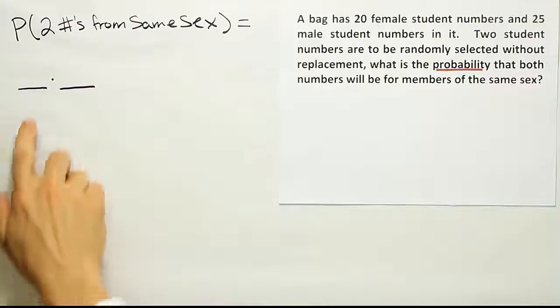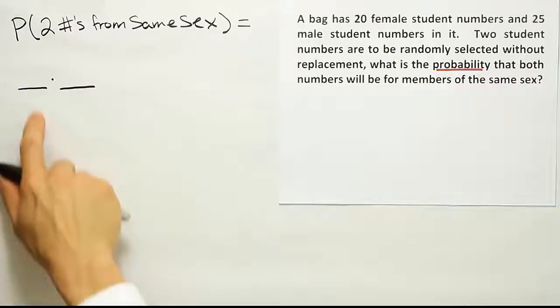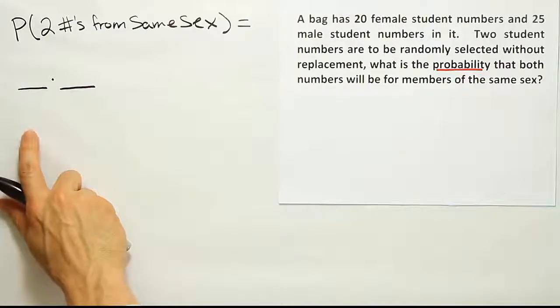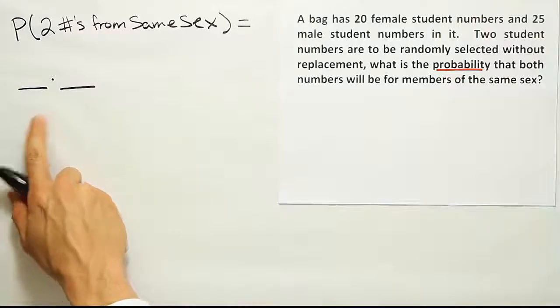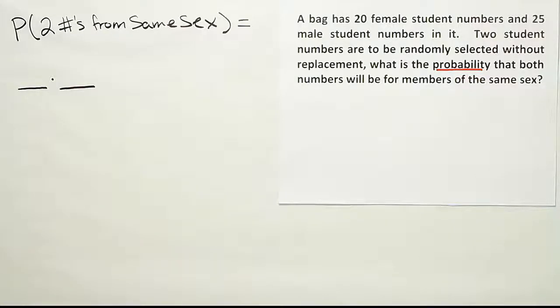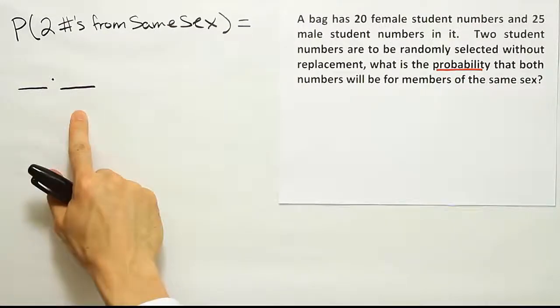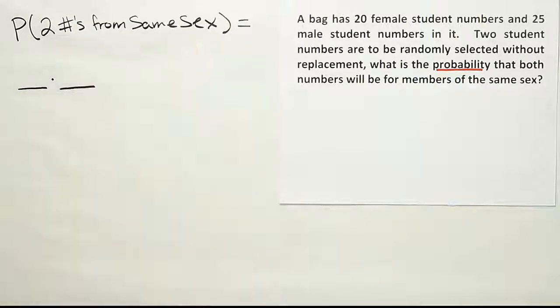So when you go to put this in, you might say, well gee, what's this space supposed to represent? It's supposed to be the probability that the first number I take is from where? That's kind of a tough one. You know, you might naively say, well, the first number is, say, female, and then the second number would be female. That would be that two numbers are from the same sex, but why female? Why not male, for example?